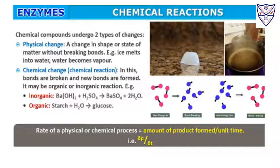Chemical compounds undergo two types of changes. A physical change involves a change in shape or state of matter without breaking bonds — like ice melting or water changing into vapour. A chemical change involves breaking and forming bonds; it may be organic or inorganic. For example, inorganic: Ba(OH)2 reacts with sulphuric acid to give BaSO4 and water. Organic: starch is hydrolyzed into glucose. The rate of physical or chemical processes is the amount of product formed per unit time.